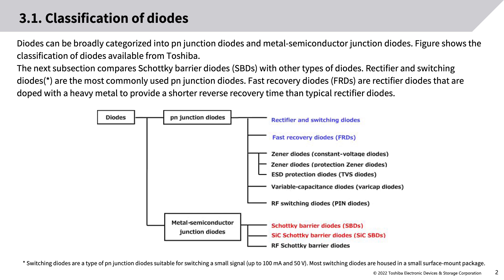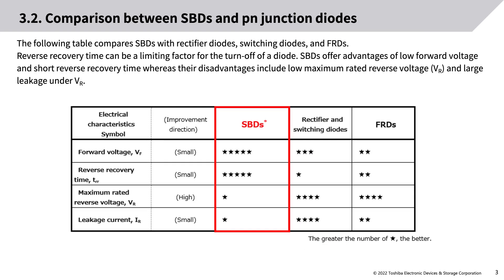Rectifier and switching diodes are the most commonly used PN Junction Diodes. Fast Recovery Diodes (FRDs) are rectifier diodes doped with heavy metal to provide a shorter reverse recovery time than typical rectifier diodes. The following table compares SBDs with rectifier diodes, switching diodes, and FRDs.